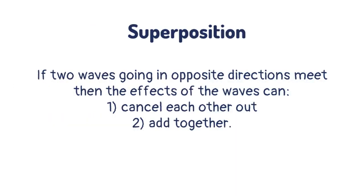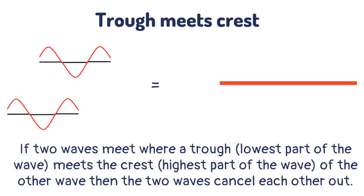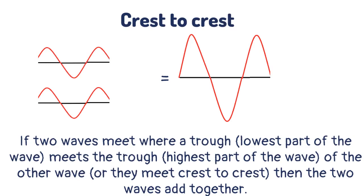If two waves going in opposite directions meet, then the effects of the waves can cancel each other out or add together. If two waves meet where a trough meets the crest of the other wave, then the two waves cancel each other out. If two waves meet where a trough meets the trough of the other wave, then the two waves add together.